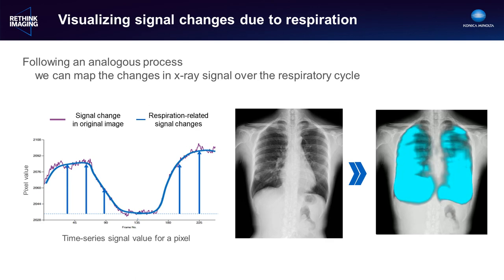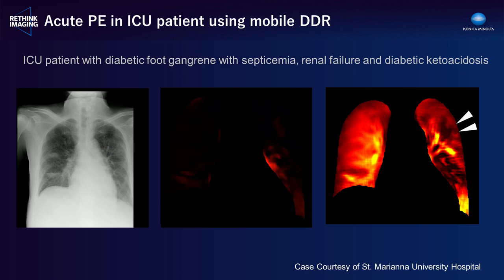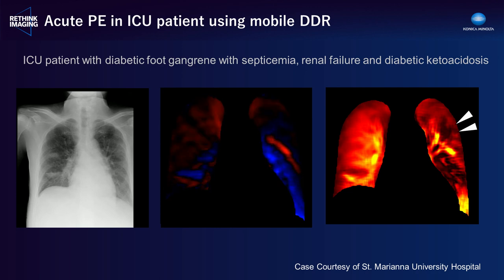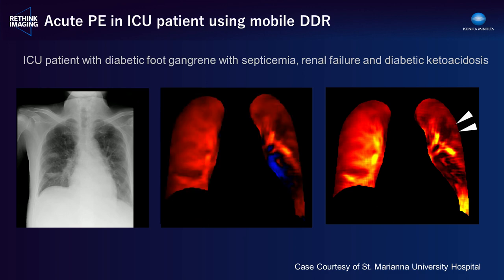Here we have a case from St. Mariana University Hospital—an ICU patient imaged with DDR on the mobile unit at the bedside. After about seven days in the ICU, the patient's respiratory condition worsened. Due to renal failure, pulmonary CT angiography was contraindicated because of the iodinated contrast agent. DDR was performed and revealed an area of focal under-intensity—an area of low blood volume within the lungs—and this patient was diagnosed with a pulmonary embolism. This exam is done at the bedside without any injected contrast agent; we're simply looking at changes in x-ray attenuation over time.